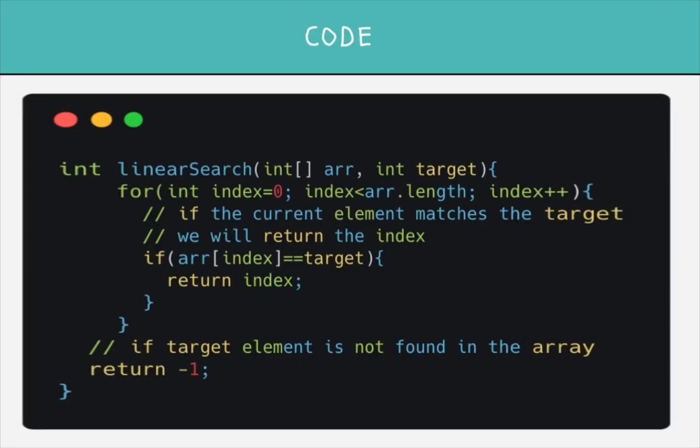Now let's take a look at the code. We are given the array and the target number. We iterate over the whole array using a for loop, starting at index zero until the full length of the array. If we find an element equal to the target, we return its index. If we finish iterating without finding the element, we return minus one.